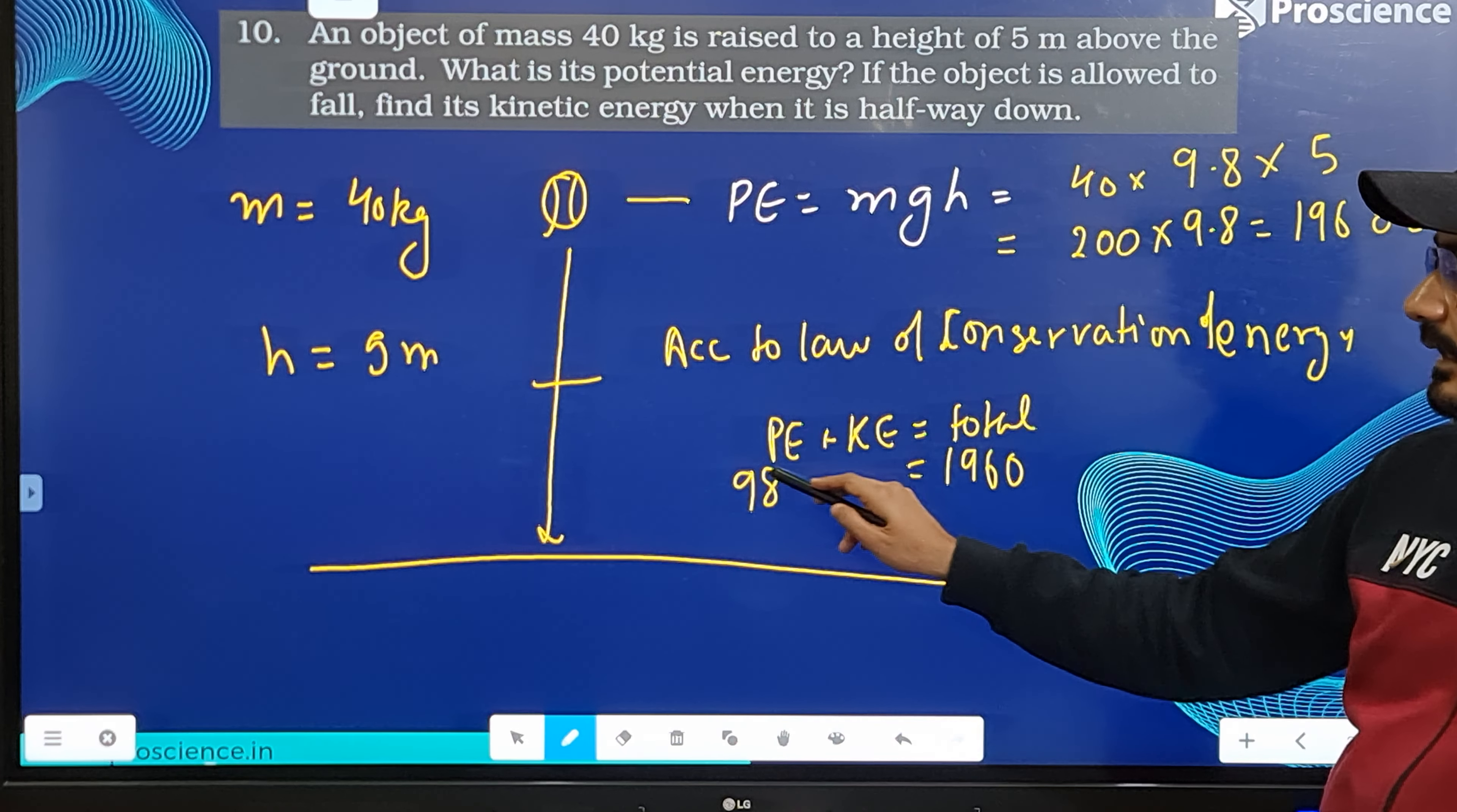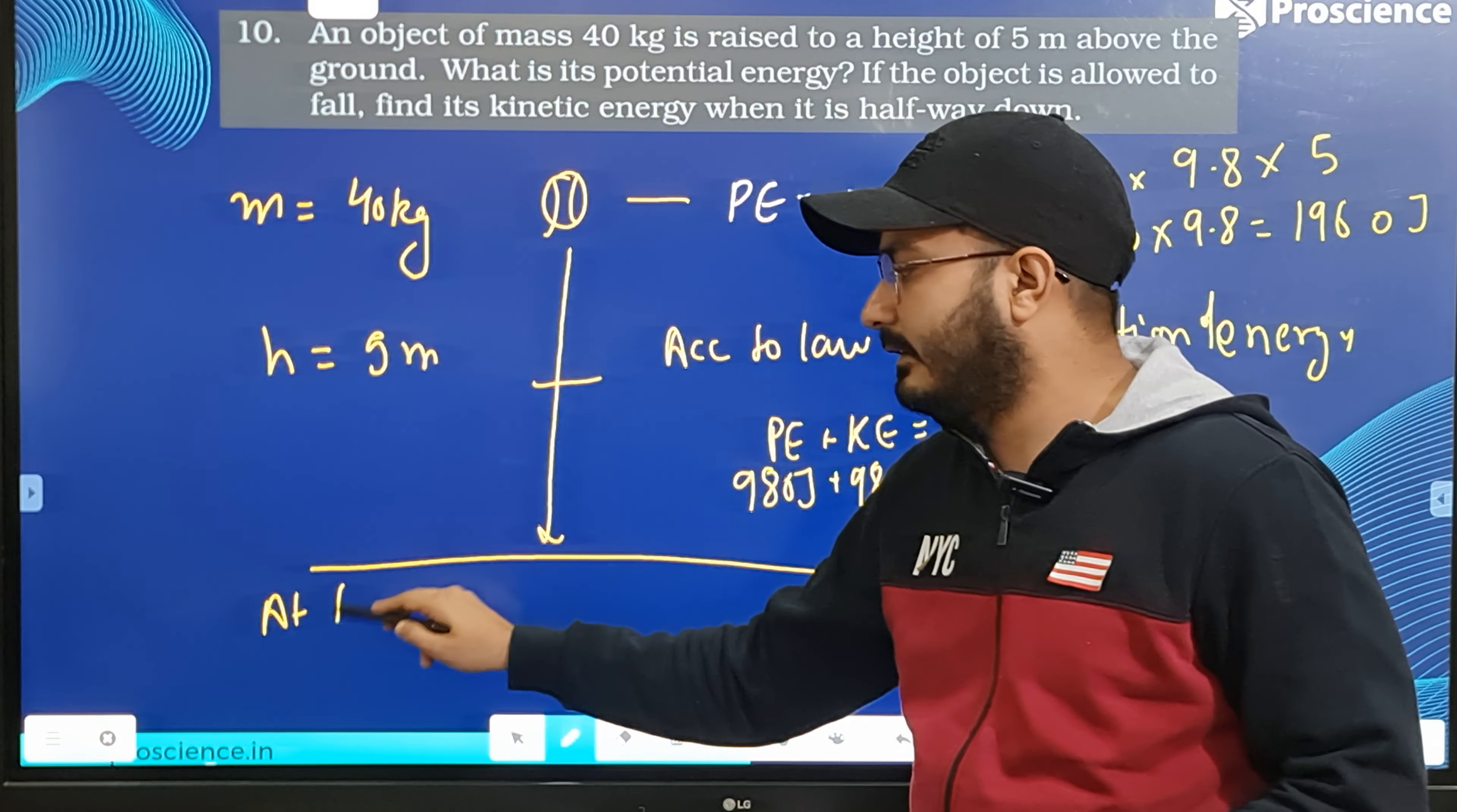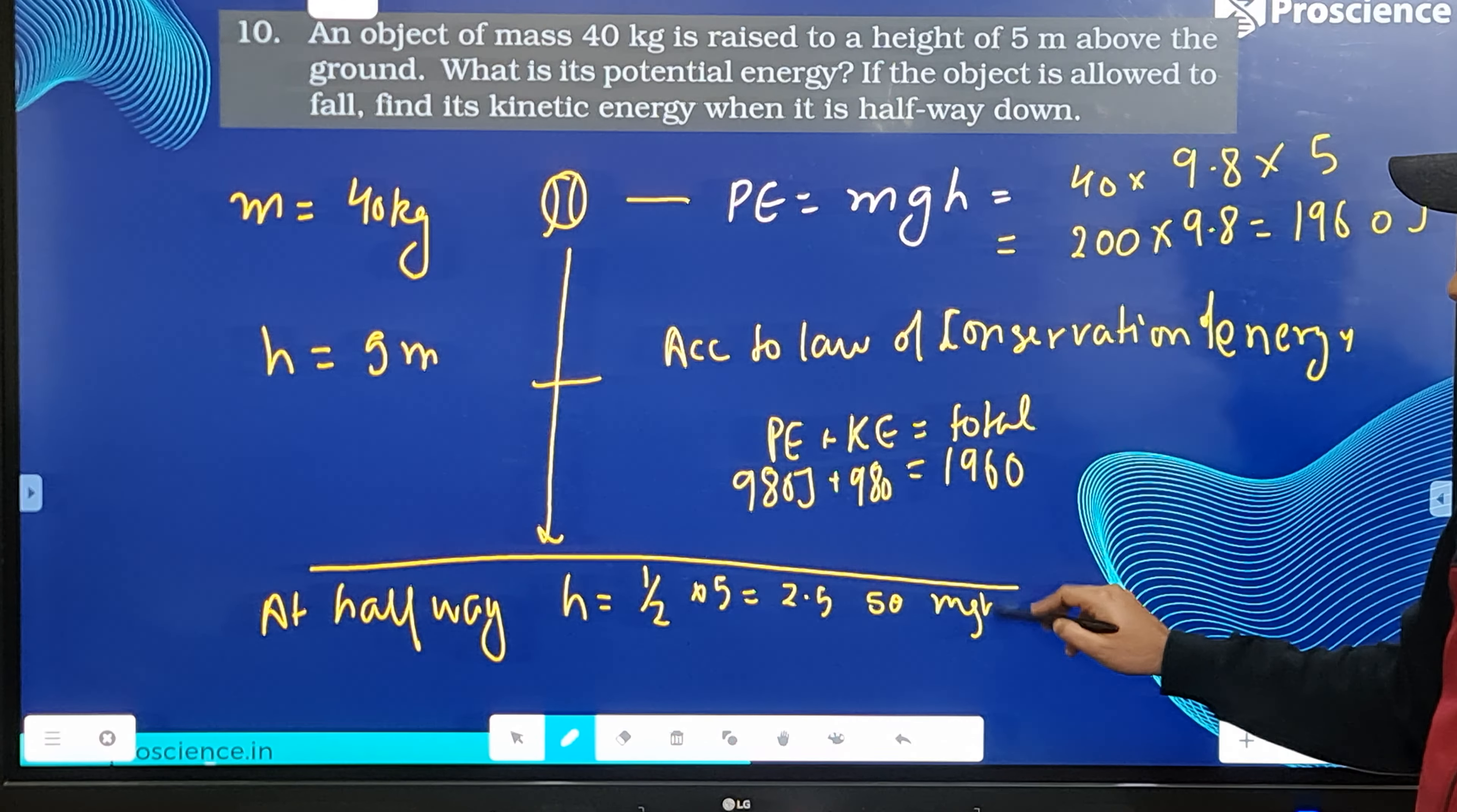So what you can do is at halfway down, h is equal to half of 5 meters, which is equal to 2.5 meters. So mgh is equal to 980 joules. Total is 1960.